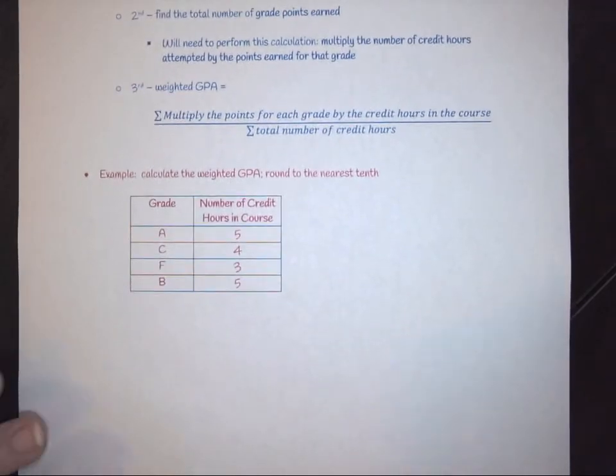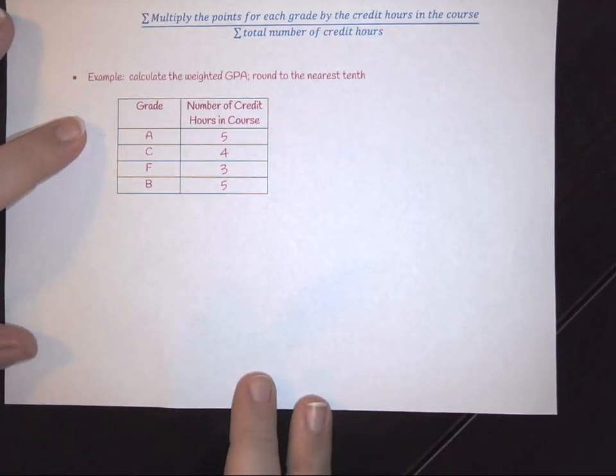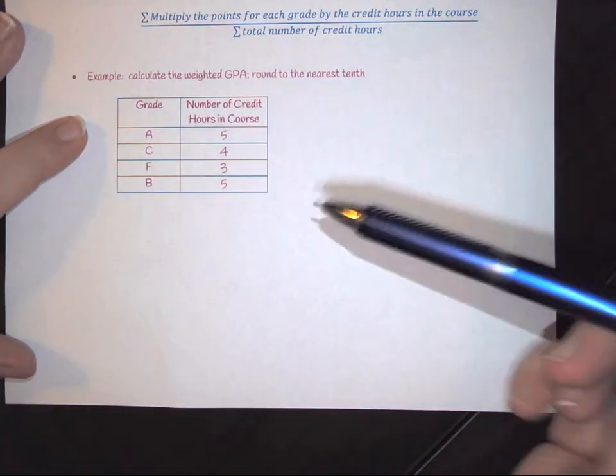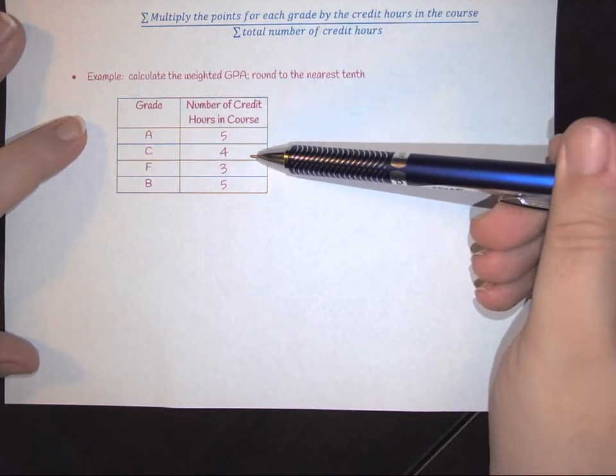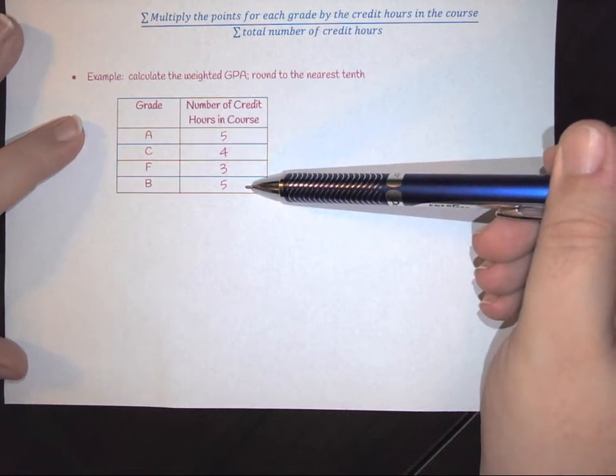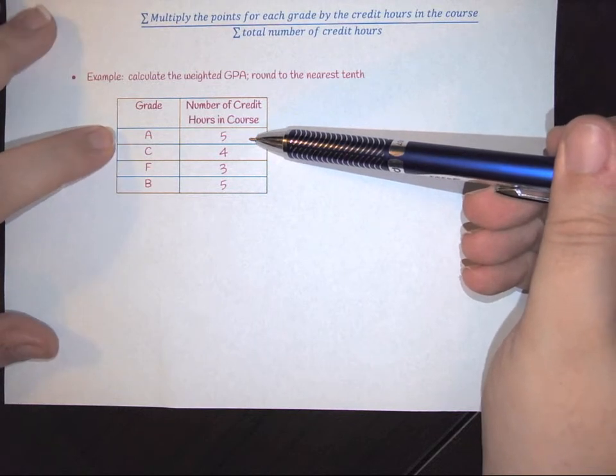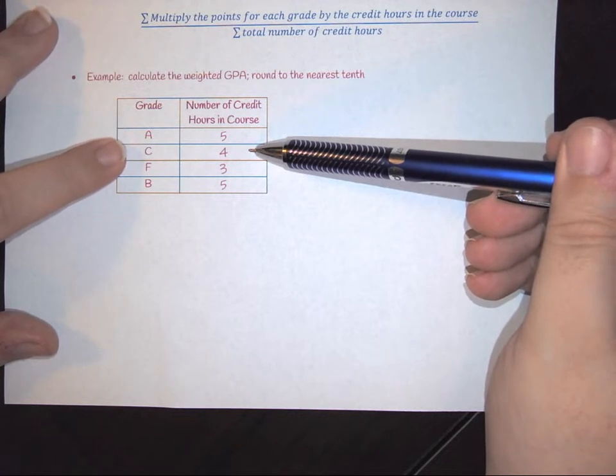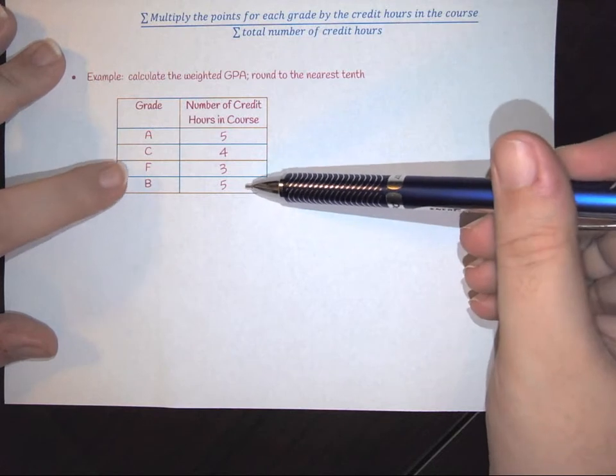So this is how it works in a nutshell. Let's say for example that I am a student and I took these courses. I took a course worth five credit hours, four credit hours, three credit hours, and another five credit hours. In my first five credit hour course I earned an A. In the second one I earned a C. In my three credit course I earned an F, shame on me. And in my five credit course I earned a B.